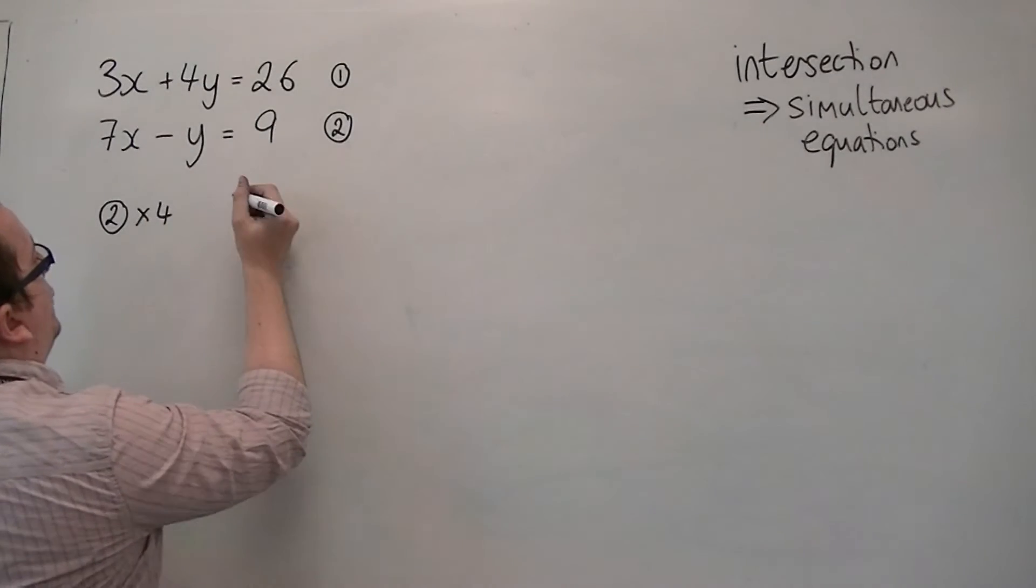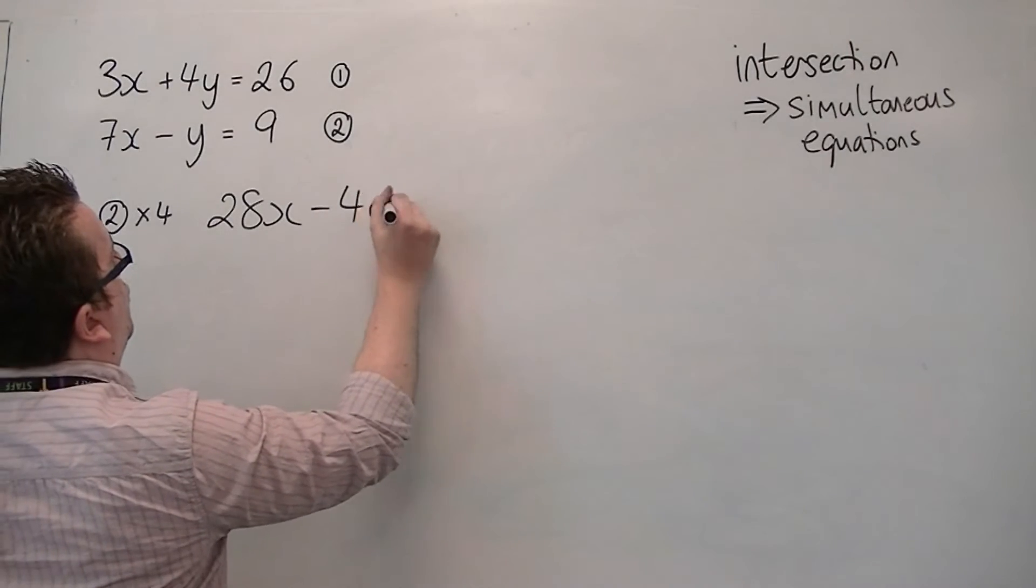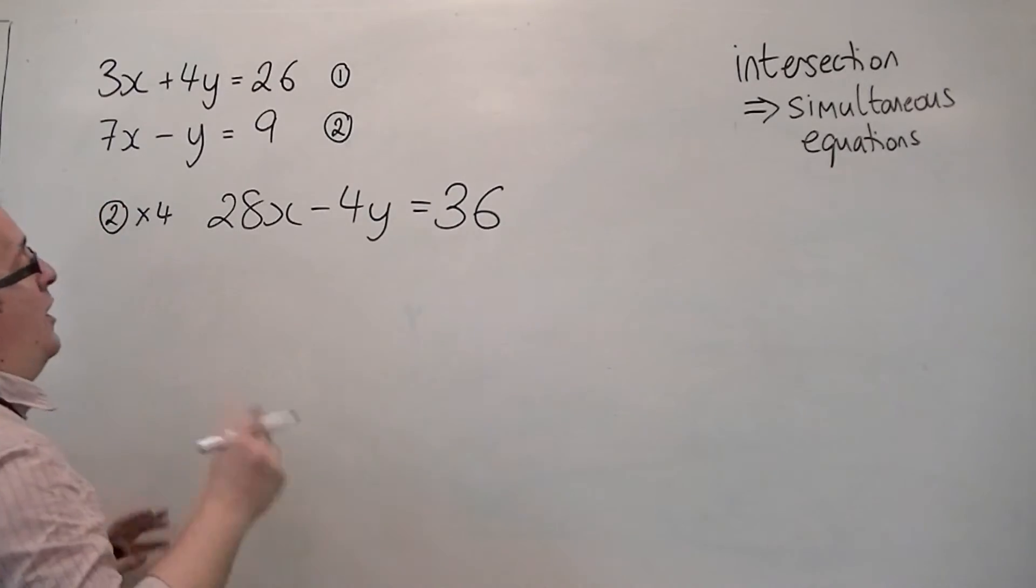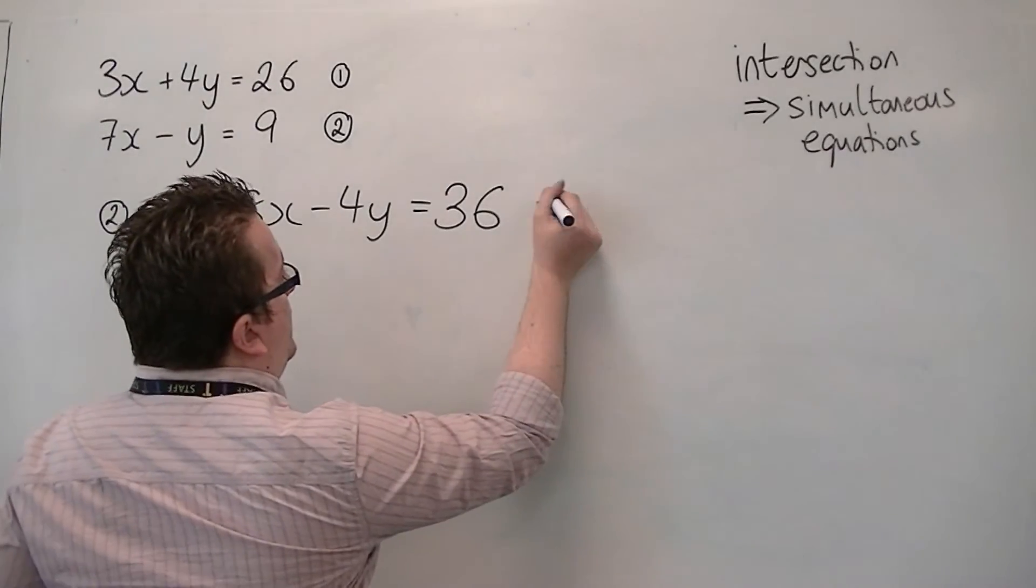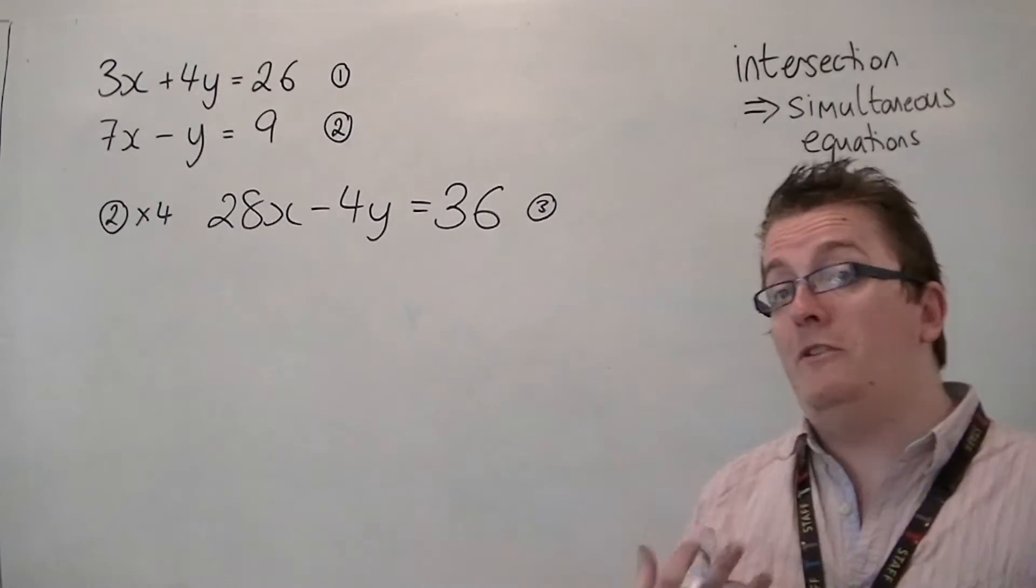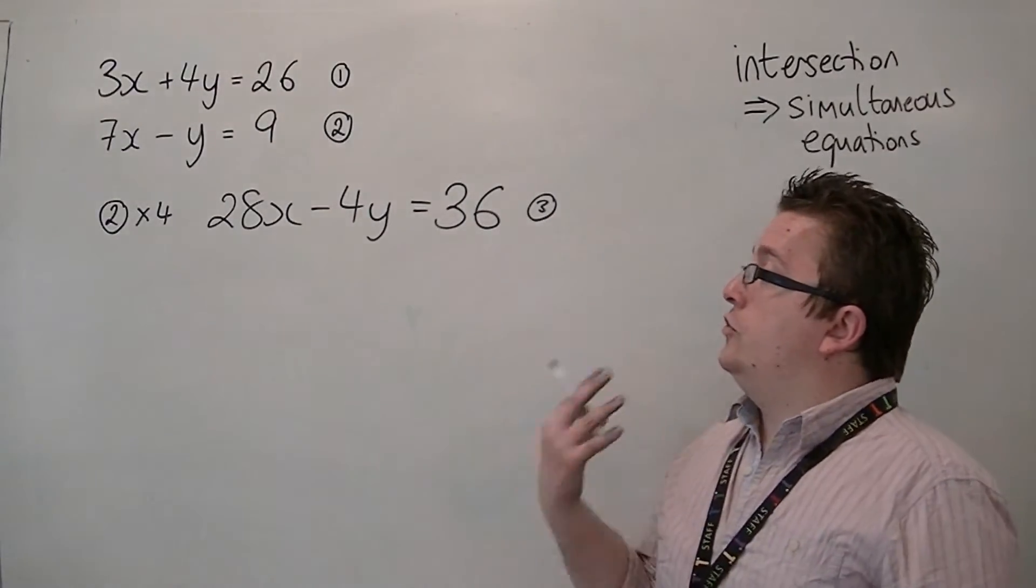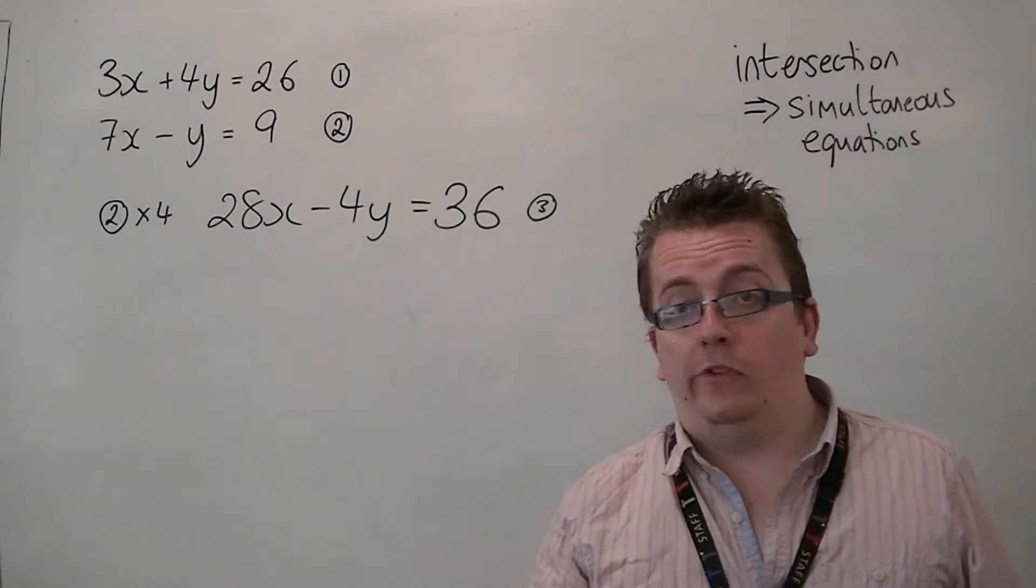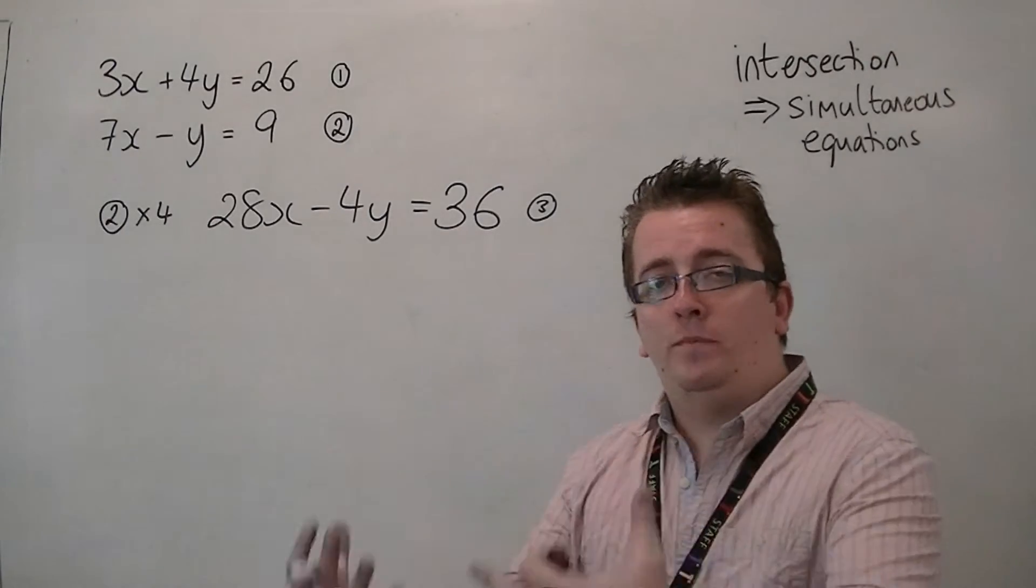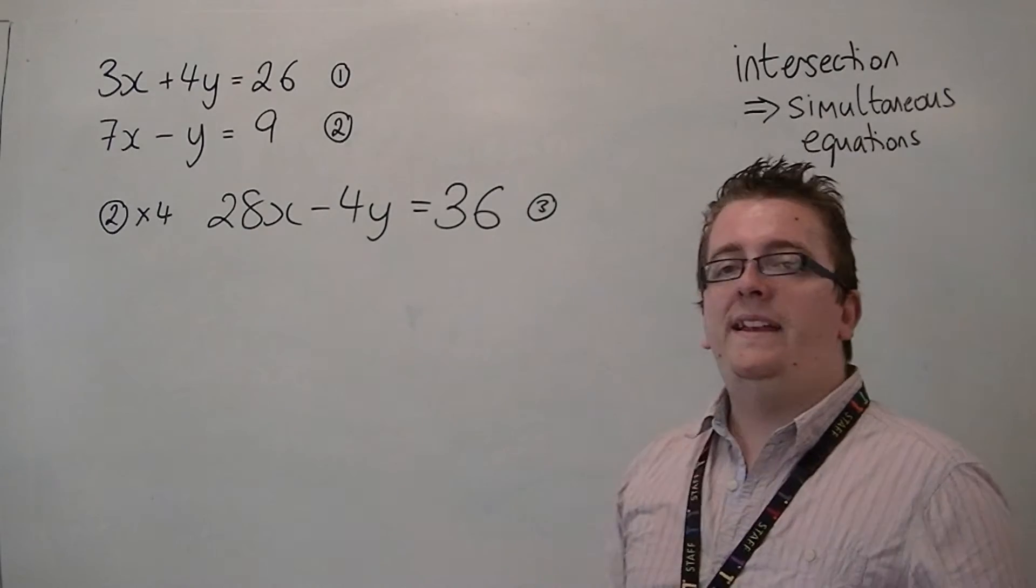And I'm going to get 7 lots of 4 is 28. So 28x take away 4y is equal to 9 times 4, that's 36. And I'm going to call that equation 3. Notice how I'm using this numbering system to make sure that it's very easy for the examiner to follow. It's not just for the examiner, it's also for your teacher as well.